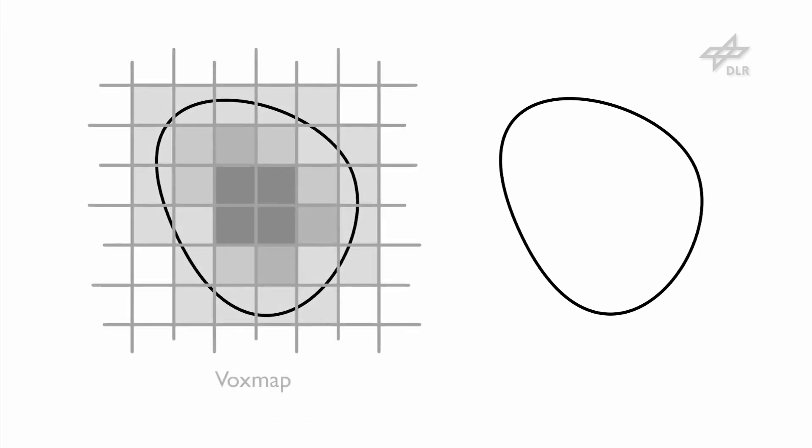Voxel maps, which are voxelized distance fields, and point shells, which are uniformly distributed point clouds with inwards pointing normal vectors.